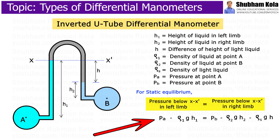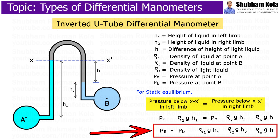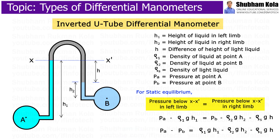After simplifying this equation, we get the difference of pressure at points A and B, that is PA minus PB. In this way, we can measure the pressure difference between two points in the same pipe or in two different pipes.